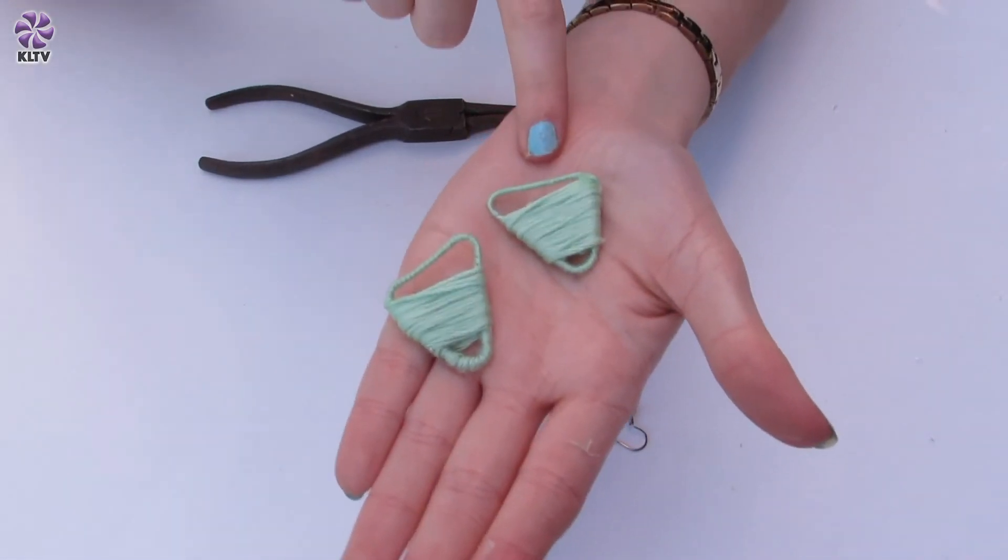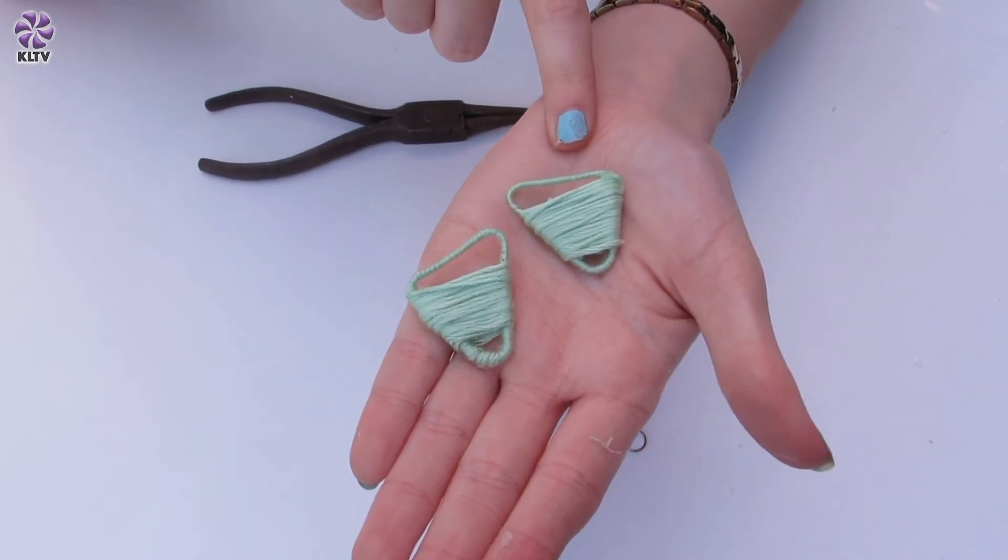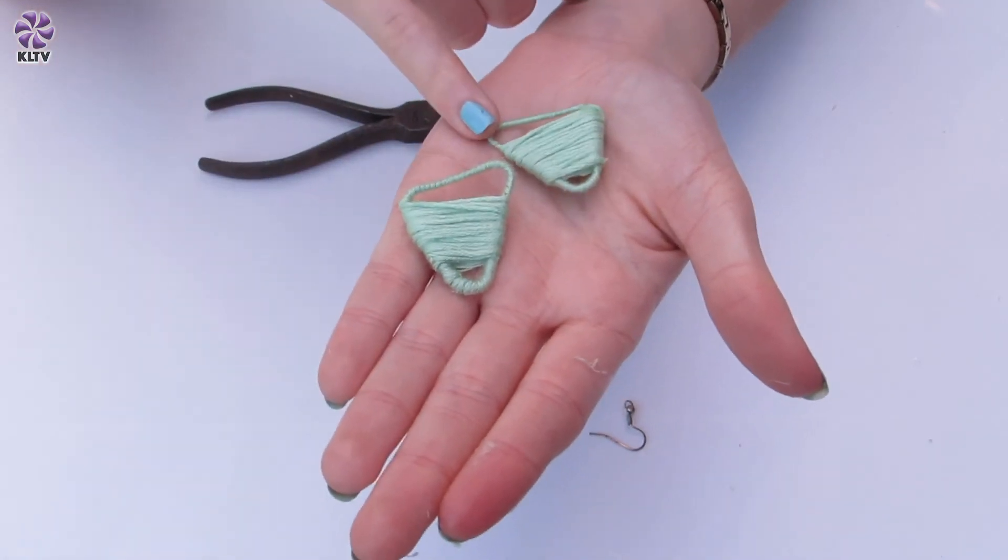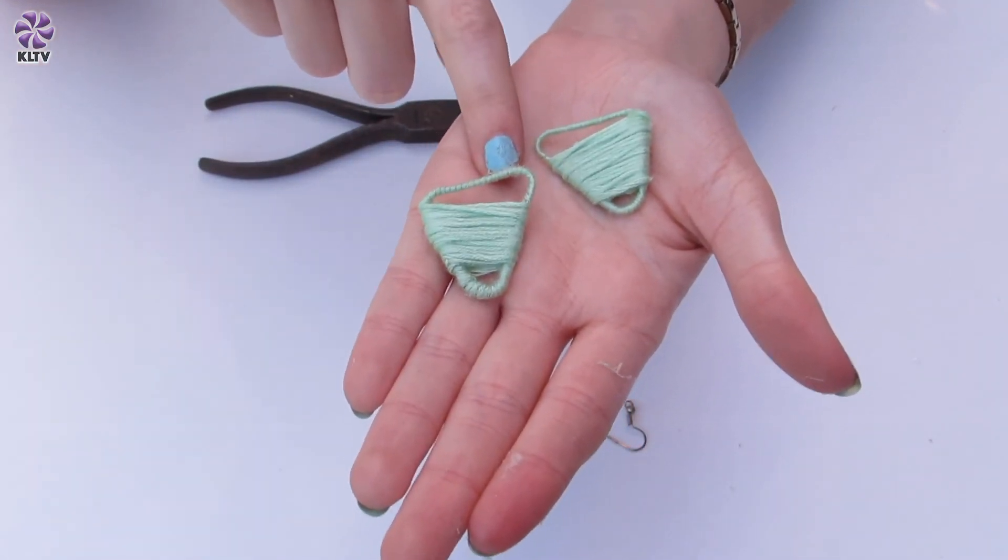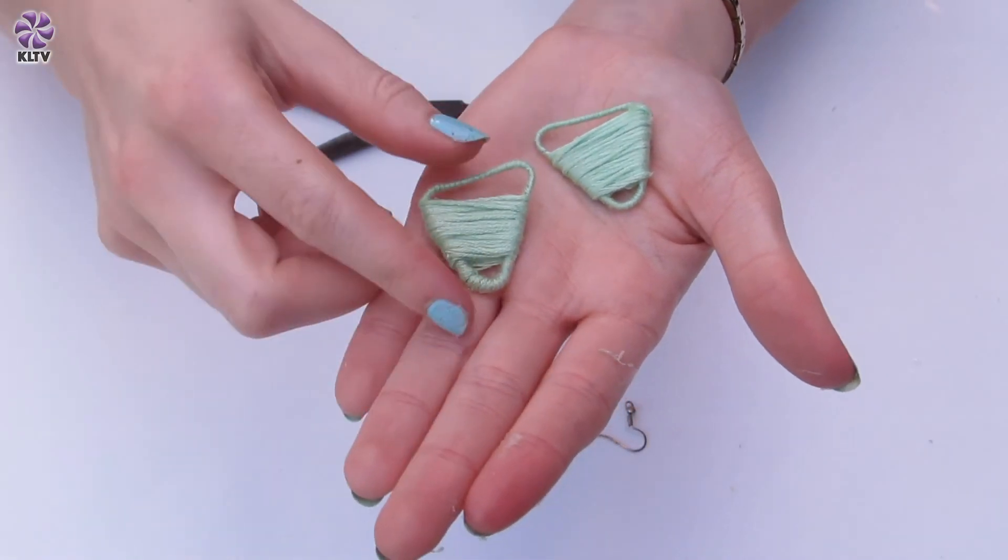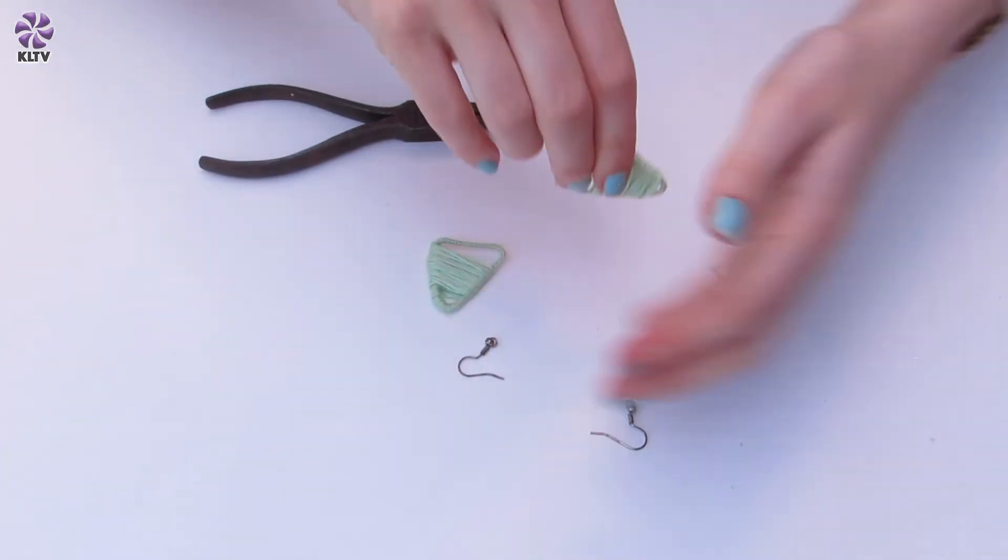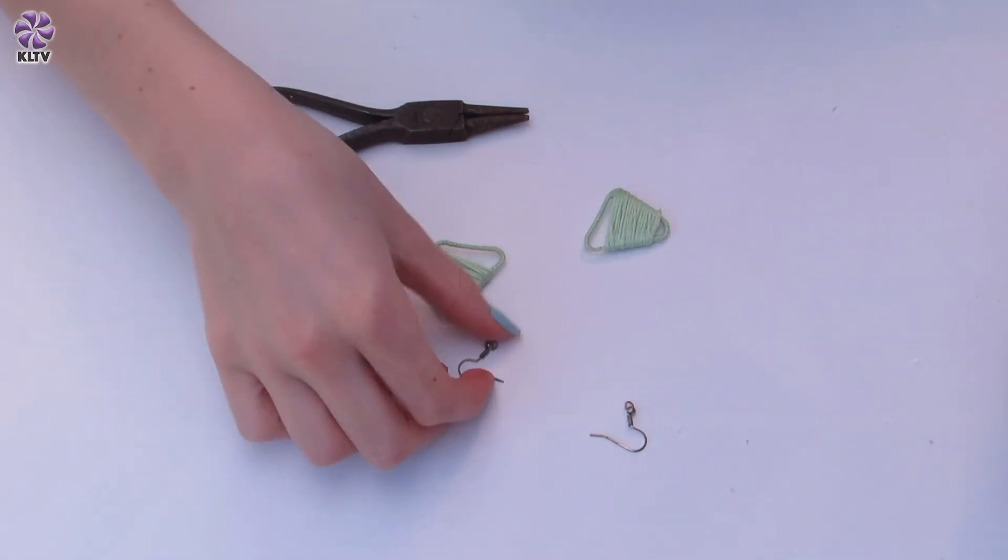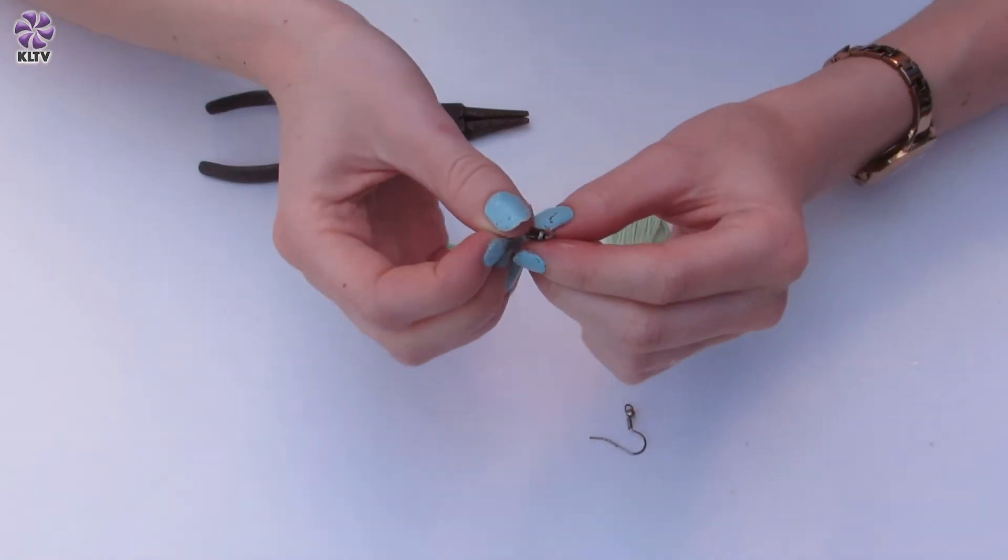So I'm just going to head off camera now and do my other shape. So as you can see, I have finished wrapping the embroidery thread around the centers of my triangle shapes, so now it's time to attach our earring hooks so that we can actually wear these shapes as earrings.